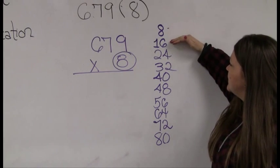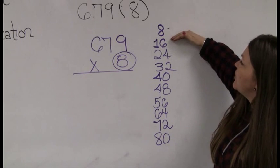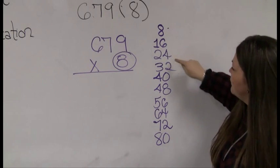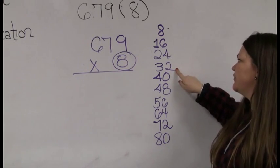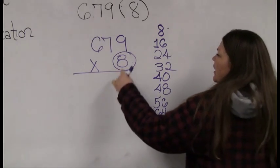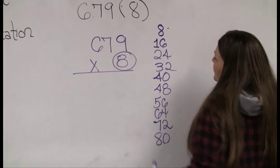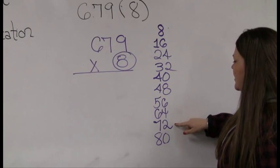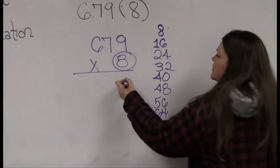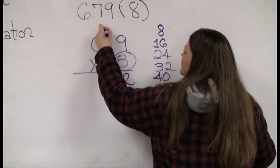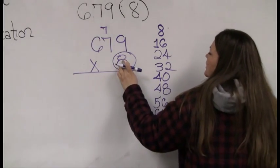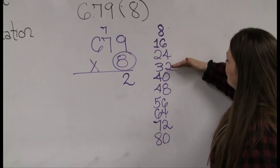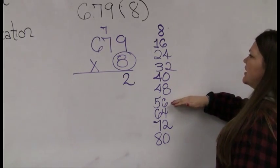So how does this help? Eight is 8×1, sixteen is 8×2. If I want 8×4, I go to the fourth row — that's 32. Now I want 8×9, so I go to the ninth row — that's 72. Two goes down, seven gets carried. Now I need 8×7, going to the seventh row — that's 56.